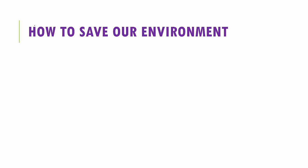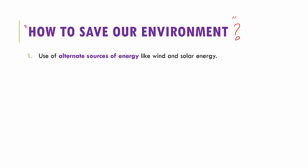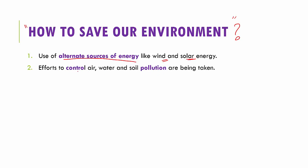What can we do to save our environment? This is the most important question we have to be asking today. The first thing we can do is try to use alternate sources of energy such as solar energy and wind energy. In your houses, fix solar panels so that you have solar water heaters. Second, we should take efforts to control air, water and soil pollution, and do what little we can as citizens to help save the environment.